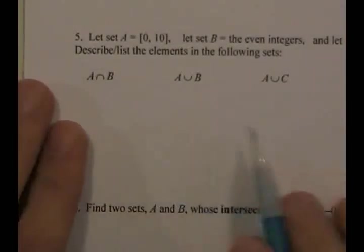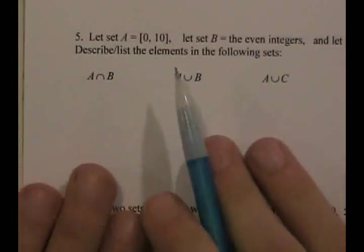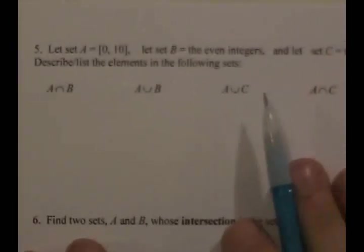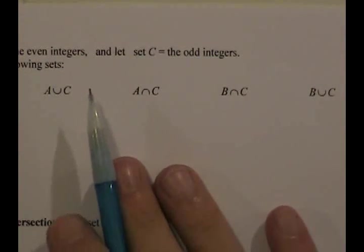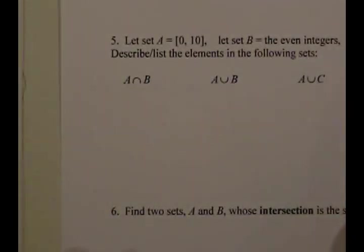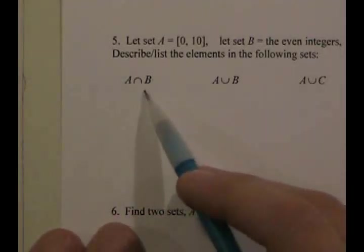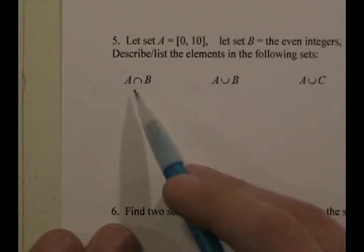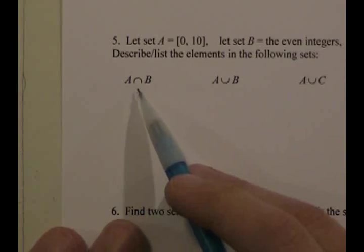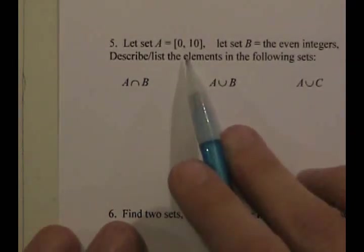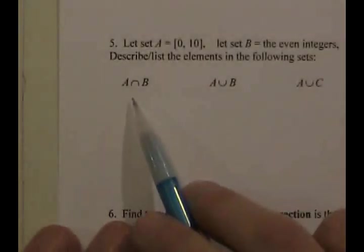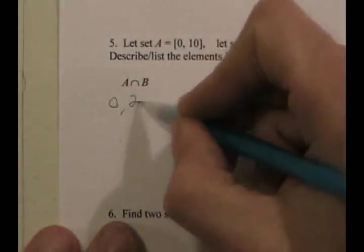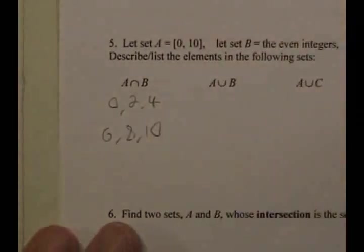The second page covers intersections and unions. Set A is all numbers between zero and ten inclusive. Set B is the even integers: 0, 2, 4, 6, 8, 10, and so on. Set C is the odd integers. A intersect B is every element in both A and B. Since A has all numbers between 0 and 10 and B only has the even integers, the only numbers in both sets are the even integers between 0 and 10: 0, 2, 4, 6, 8, and 10.